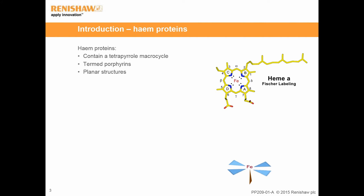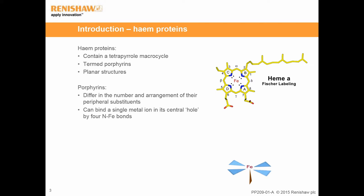Heme proteins are proteins that contain a tetrapyrrole macrocycle. Structures with a tetrapyrrole macrocycle are termed porphyrins and they have a planar structure. Porphyrins differ in the number and arrangement of the peripheral substituents.